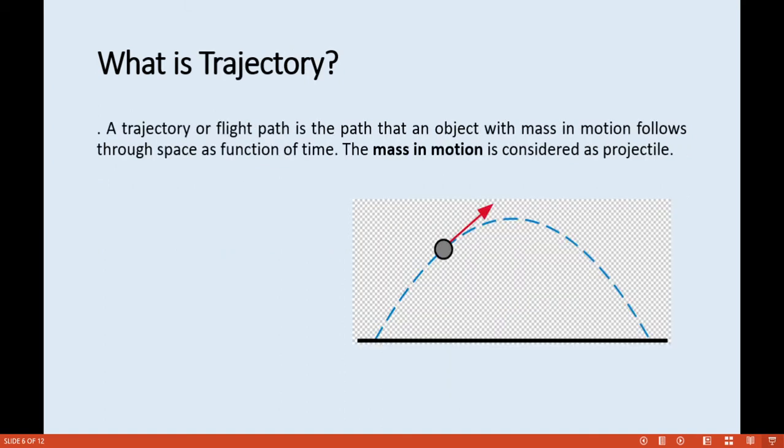A trajectory, or flight path, is the path that an object with mass in motion follows through space as a function of time. The mass in motion is considered the projectile. As you can see in the illustration, the black circle represents the mass in motion, and the blue line underneath illustrates the path — which is called the trajectory.